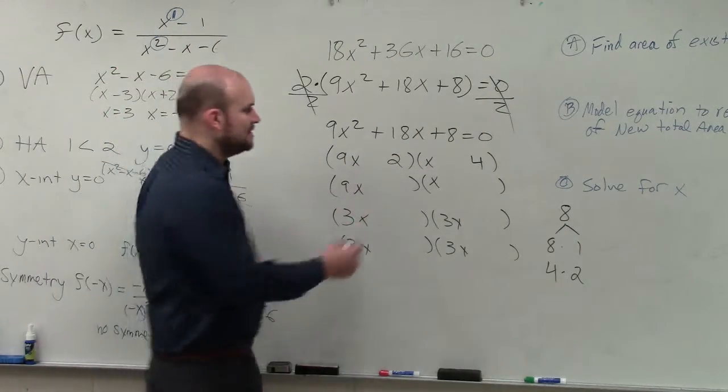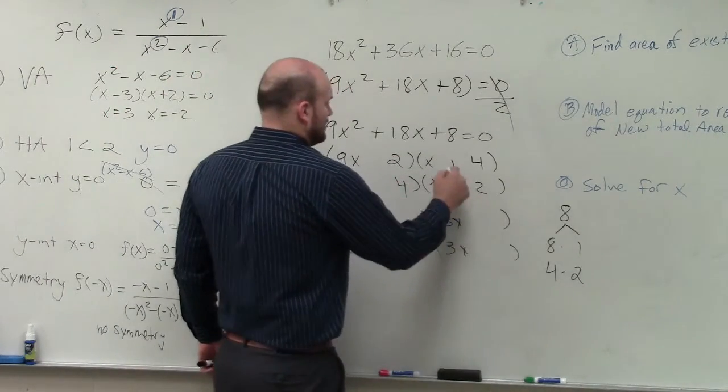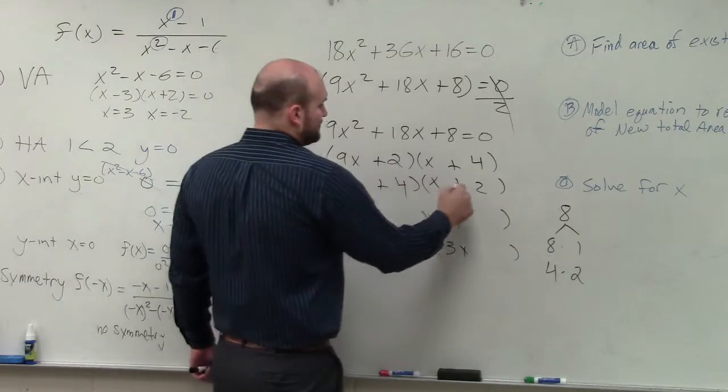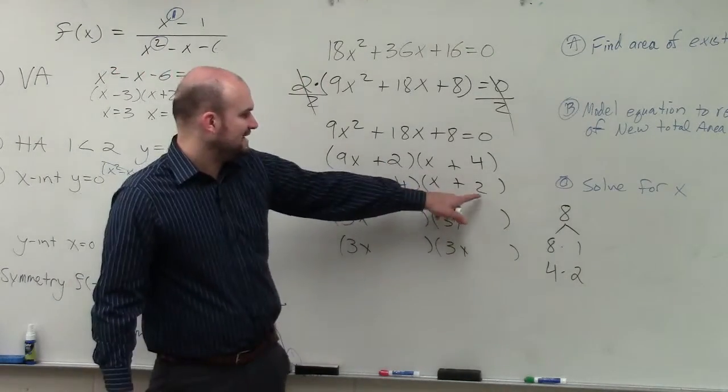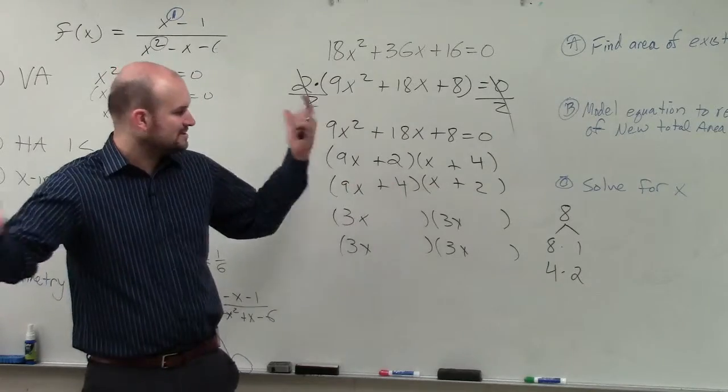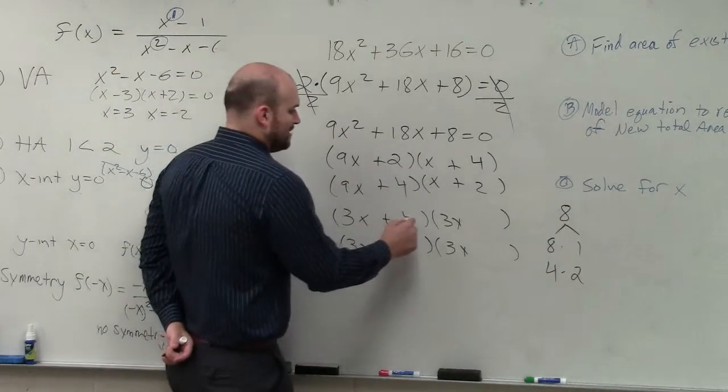So if I swap them, we know that they all have to be positive. If I swap those, this gives me 18, that gives me 4. That's 22x. That's not going to work. So what about if I do it here?